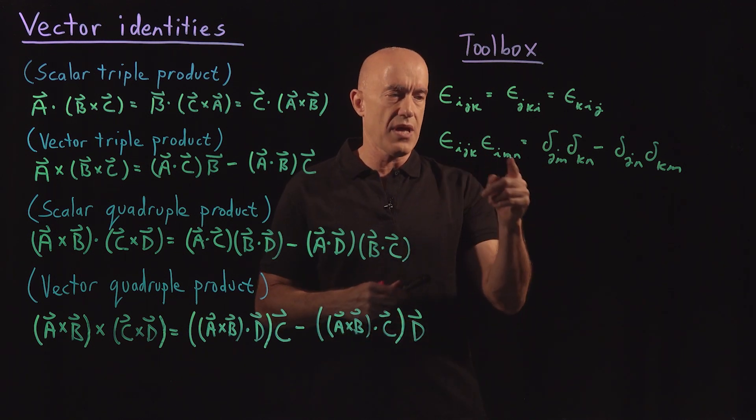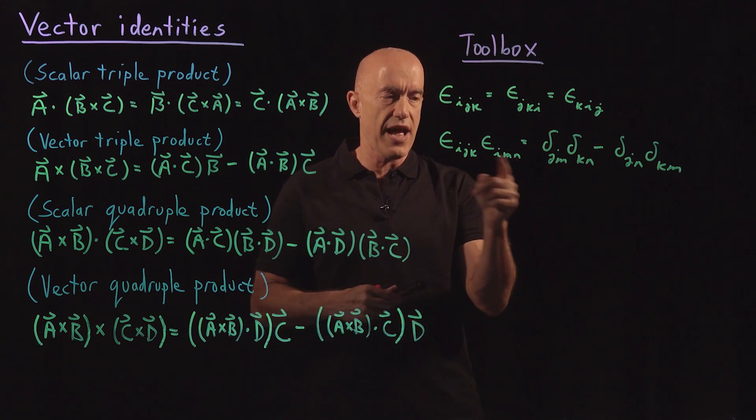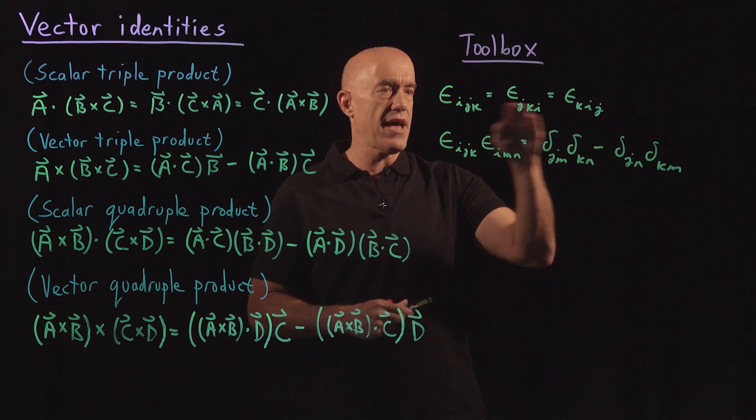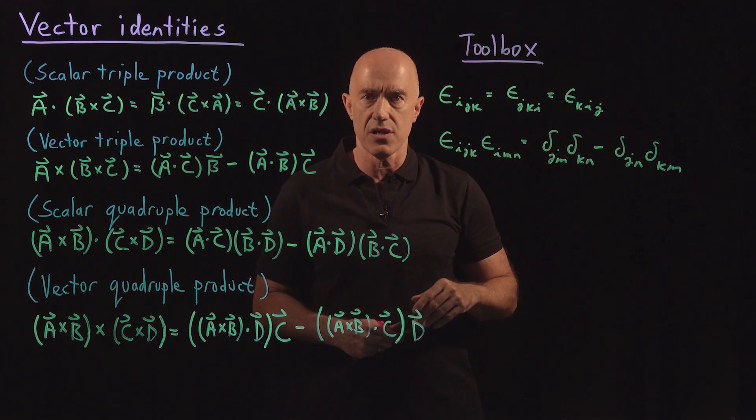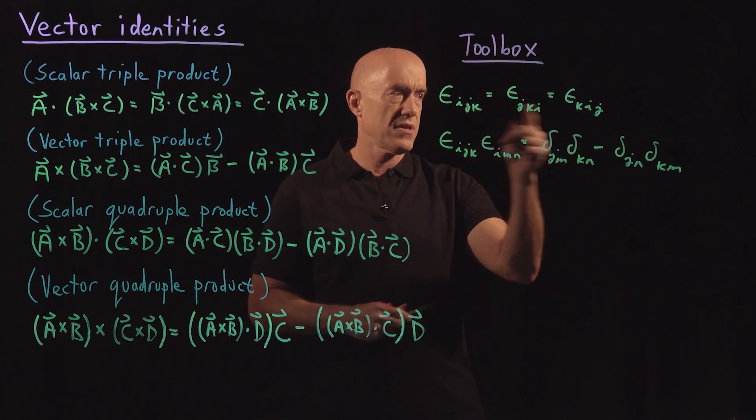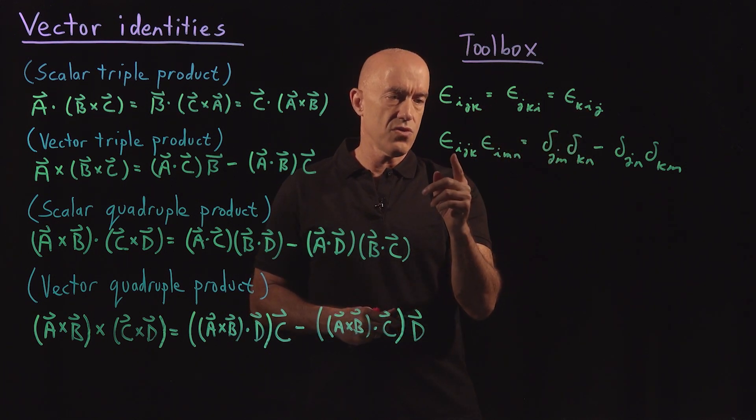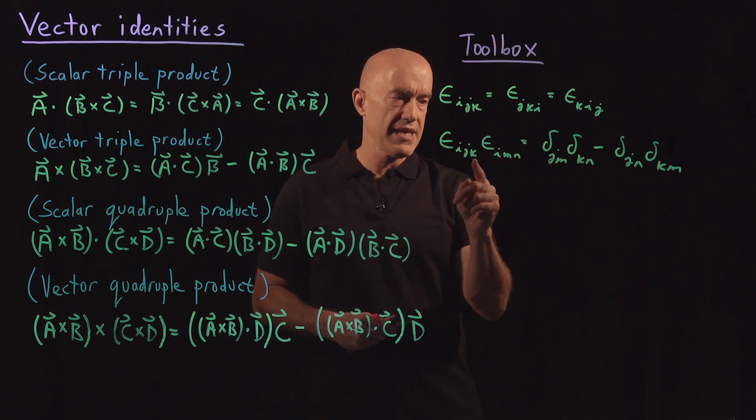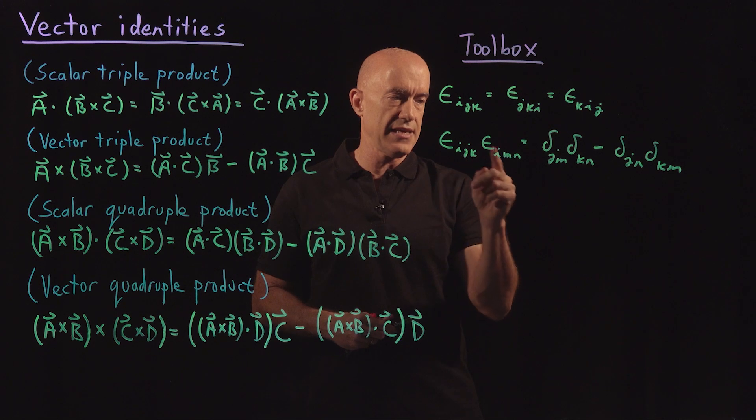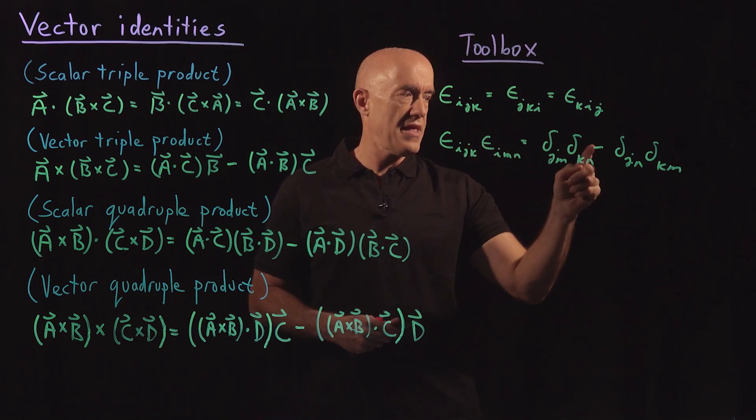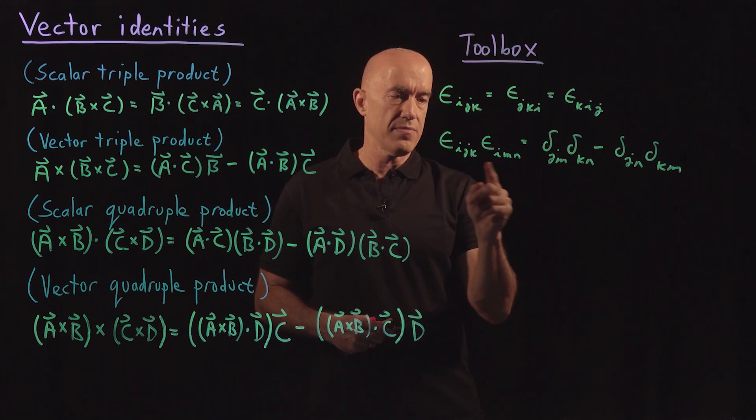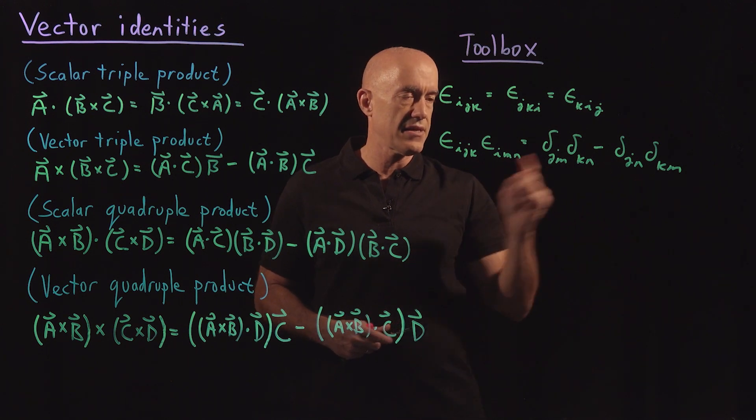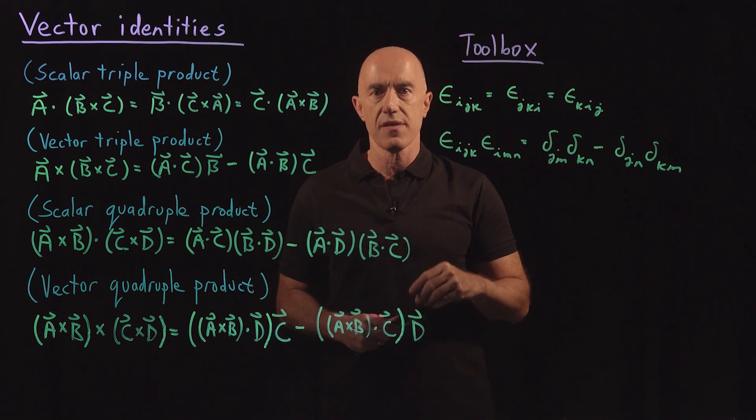Usually, I like to always put the contracting index in the first slot. I can do that by using the cyclical identity for the indices. So we contract the first index. And then we have delta_jm, delta_kn. So you see second index, second index, third index, third index. And then minus delta_jn, delta_km. So second index, third index, third index, second index. So that's how you can remember that identity.